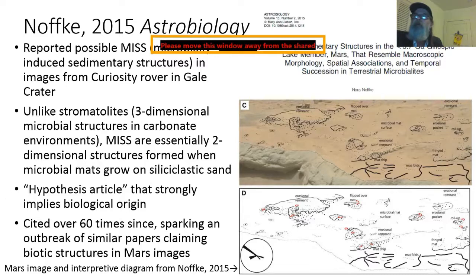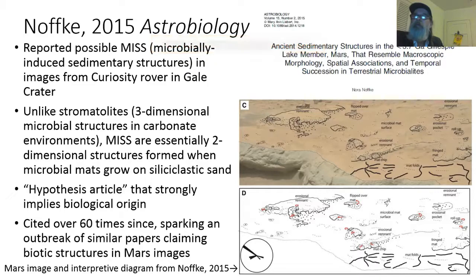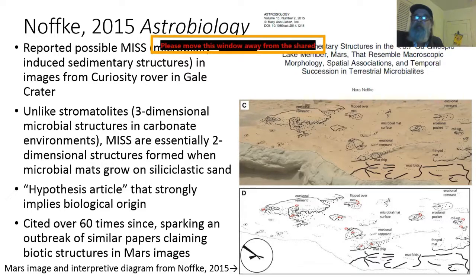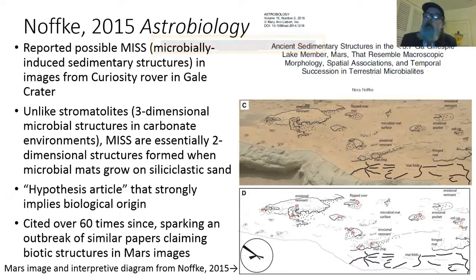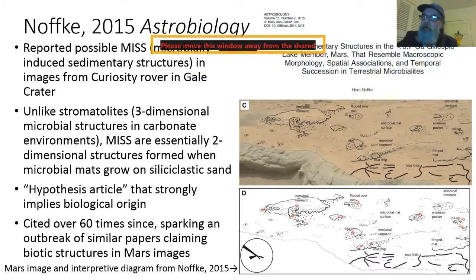I believe the editor of hypothesis articles in that journal at that time was University of Washington's very own John Baross. He was responsible for this being published with a degree of skepticism about the strength of the interpretation — and he did the right thing. This is a very influential paper; it's been cited over 60 times in the five years since it was published. Many of the papers that cited it are also claiming to have detected biotic structures in Mars images.